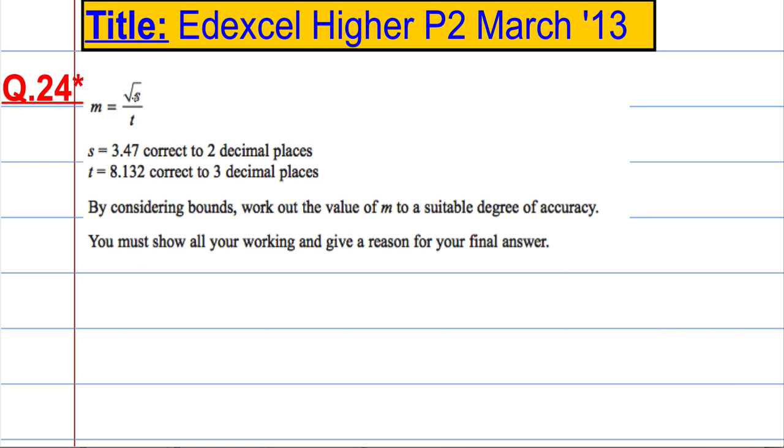We're told that m equals root s over t, where s is 3.47 to 2 decimal places and t is 8.132 to 3 decimal places. By considering bounds, work out the value of m to a suitable degree of accuracy, and we must show all our workings and give a reason for a final answer.